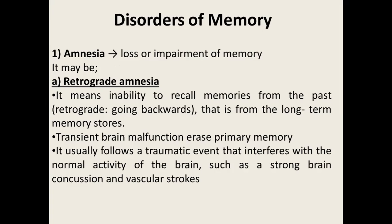If there is impairment of memory, it is called amnesia. Retrograde amnesia means the person is unable to recall memories from long-term stores — they cannot remember events before the injury. It is a transient brain malfunction which erases primary memory and usually follows a traumatic event that interferes with normal activity, such as strong brain concussion or vascular strokes. This is depicted in movies — such as those with Aamir Khan or Salman Khan — where after a concussion the character forgets past events. Films can actually be quite informative about such medical conditions.